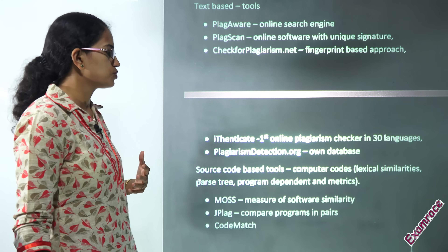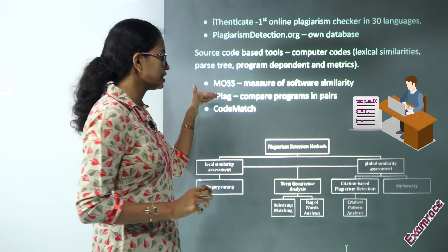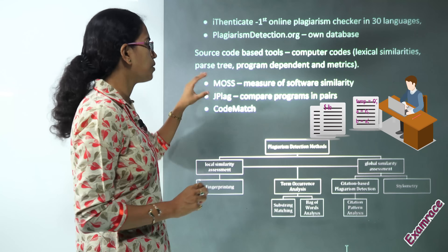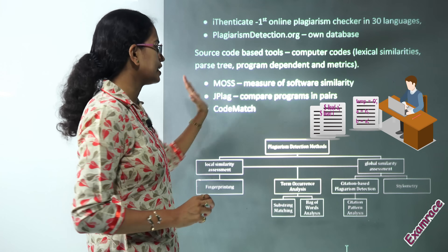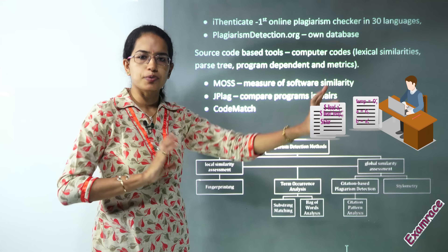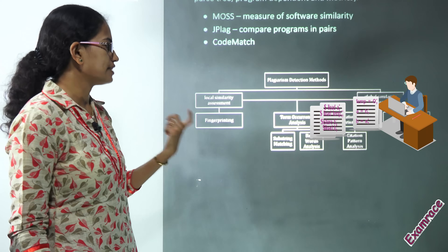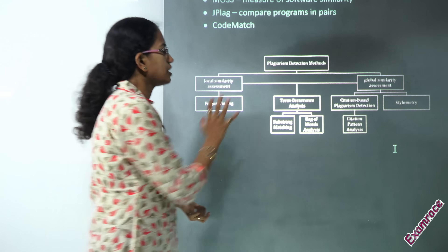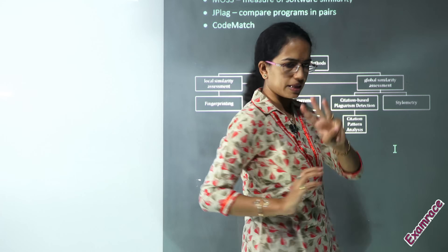When it comes to source code-based tools, we usually have three: MOSS, JPlag, and CodeMatch. Under MOSS we have measures for software similarity. Under JPlag we are trying to compare programs in pairs. CodeMatch is used to match the code.